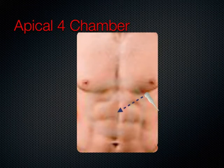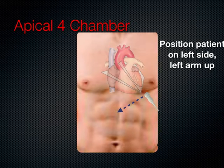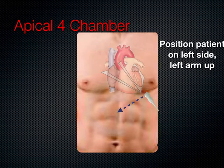After looking at the subcostal view and the inferior vena cava, we move to the apex of the heart and get a four-chamber view looking up from the apex into the thorax, with the indicator towards the patient's right. The probe is placed approximately where the patient's apex is, which can vary significantly from patient to patient — some are more lateral, some more vertical depending on comorbidities. If you can't get a good view, roll the patient onto their left side with their left arm up to open the rib spaces and allow the probe to go between the ribs.